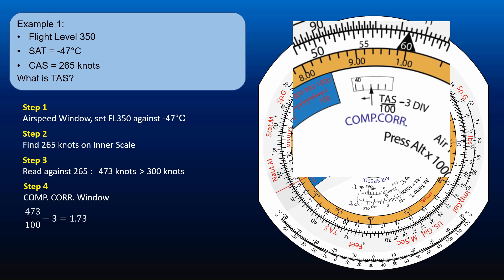Now in the compressibility correction window move the index arrow 1.73 divisions to the left. It is not easy to judge this to the second decimal place, but try to be as accurate as possible.